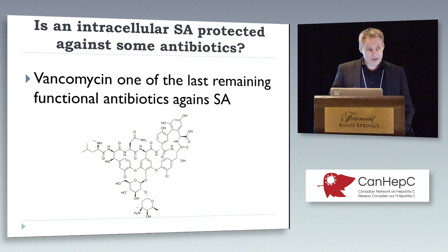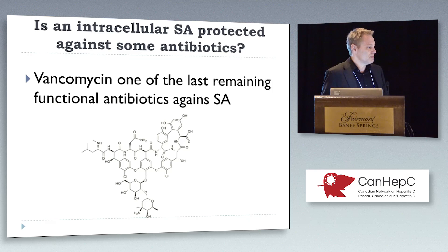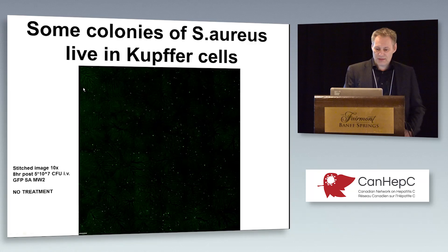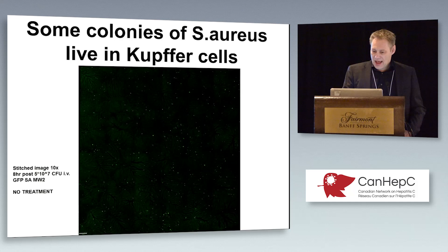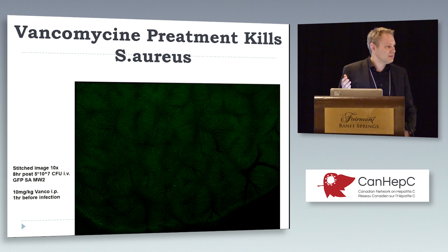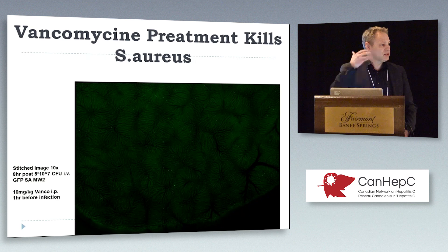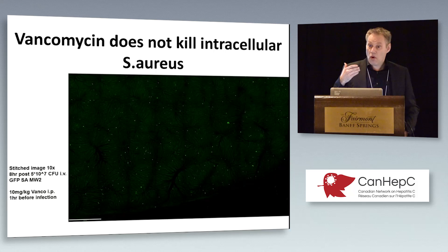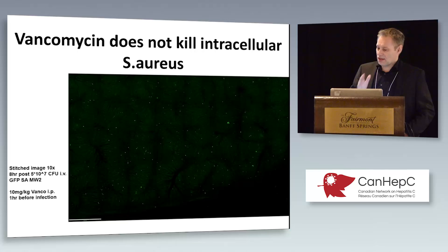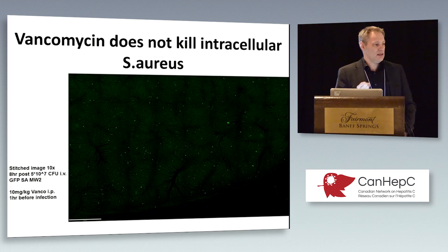The good news is we can still treat methicillin-resistant Staph aureus — you just give vancomycin for six weeks IV. And it's not unclear why we have to take such draconian approaches. If you look at a stitched image, each one of these little green dots is a large colony of staph across 64 images of the liver. If we give vancomycin pre-treatment, we eradicate staph — but patients don't come to you and say they're getting staph tomorrow. So if you give staph one hour before the vancomycin, you've done nothing. The vancomycin is actually not getting in effectively into the Kupfer cells to kill the staph.